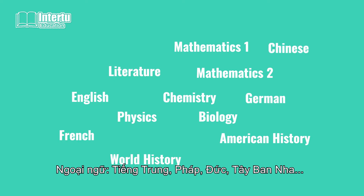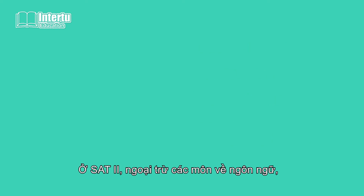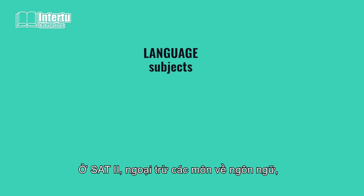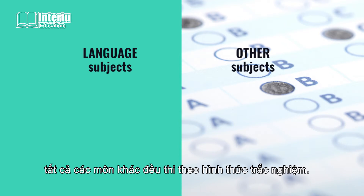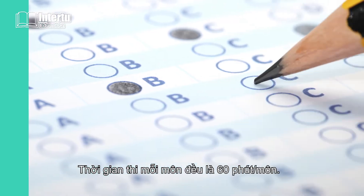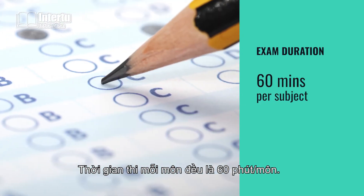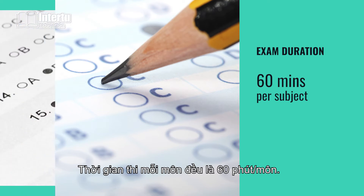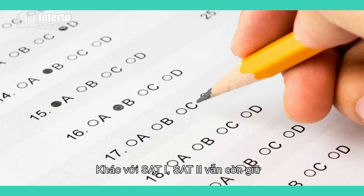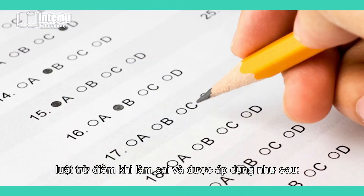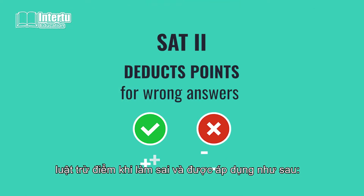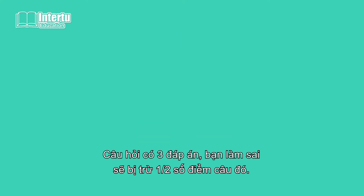SAT 2 has more than 20 exam subjects including English literature, American history, world history, Mathematics 1, Mathematics 2, physics, chemistry, biology, and foreign languages such as Chinese, French, German, and modern Spanish. Except for language subjects, all other subjects are tested with multiple choice questions, and the exam time for each subject is 60 minutes.